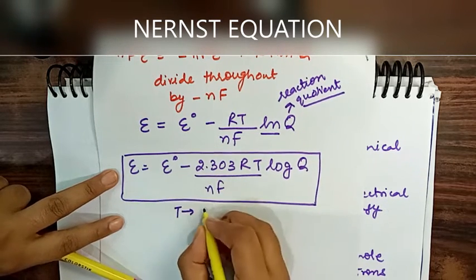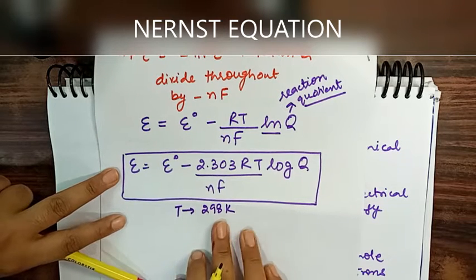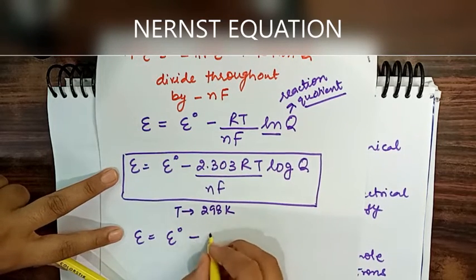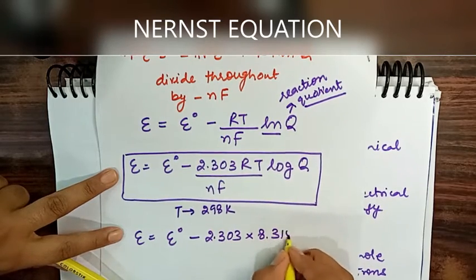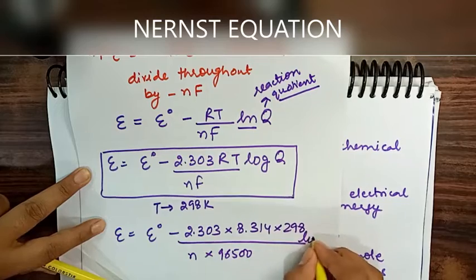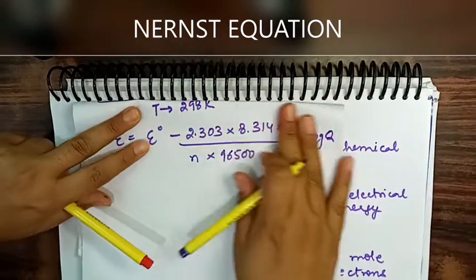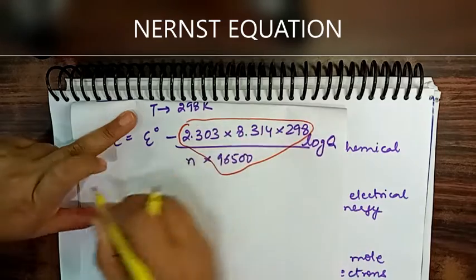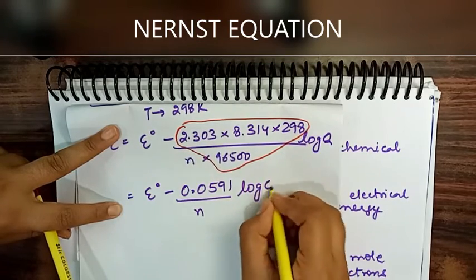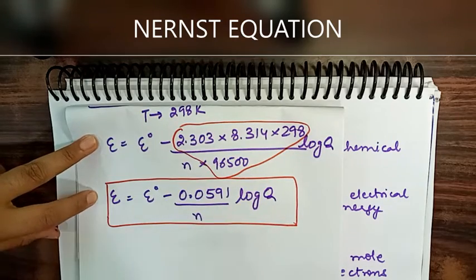Since temperature is mostly kept at 298 K in problems, we substitute R = 8.314, T = 298, and F = 96500 into the equation. After calculation, the simplified form becomes: E = E° - (0.0591/n) log Q. This is the simplest form of the Nernst equation used directly in calculations.